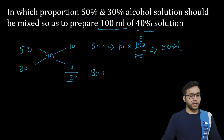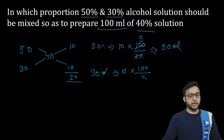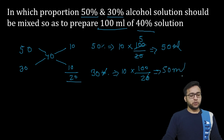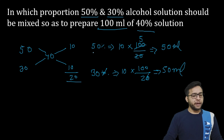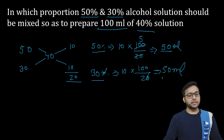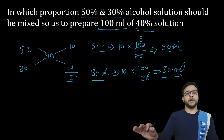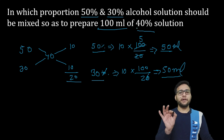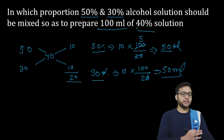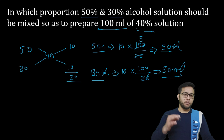30% का भी इसी तरीके से — upon 20 और यहाँ पर भी 50 ml। तो यहाँ पर बोला गया: 50% का और 30% का हमें 50-50 ml चाहिए, तो हमारा 40% का 100 ml मिल जाएगा। यह बात clear हो गई बहुत अच्छे से।